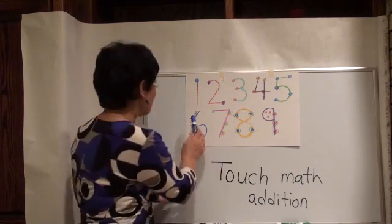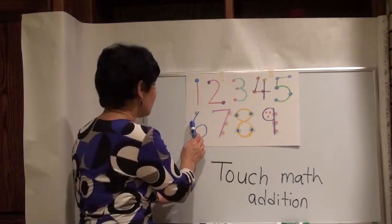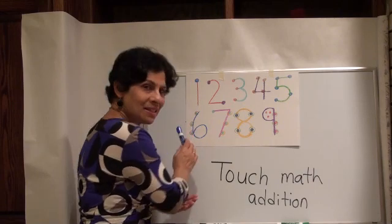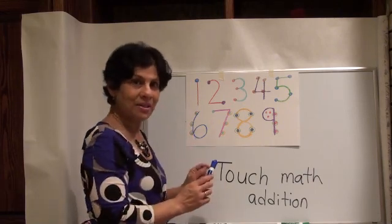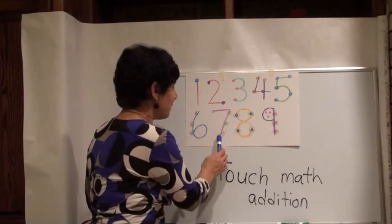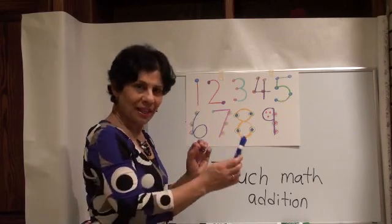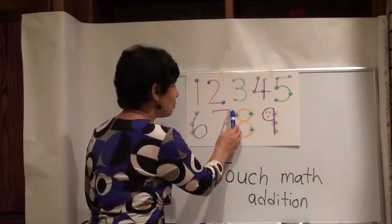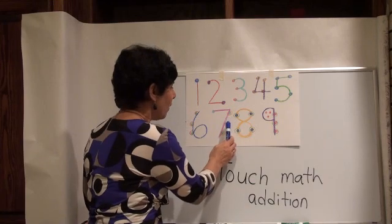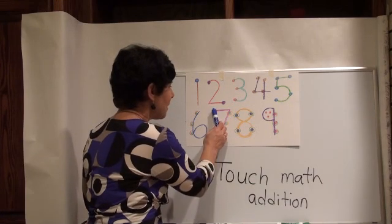So when we count, what do we get? One, two, three, four, five, and six. Let's look at the number seven now. Here's the number seven. Let's go with the dots and circles again. One, two, three, four, five, six, seven.